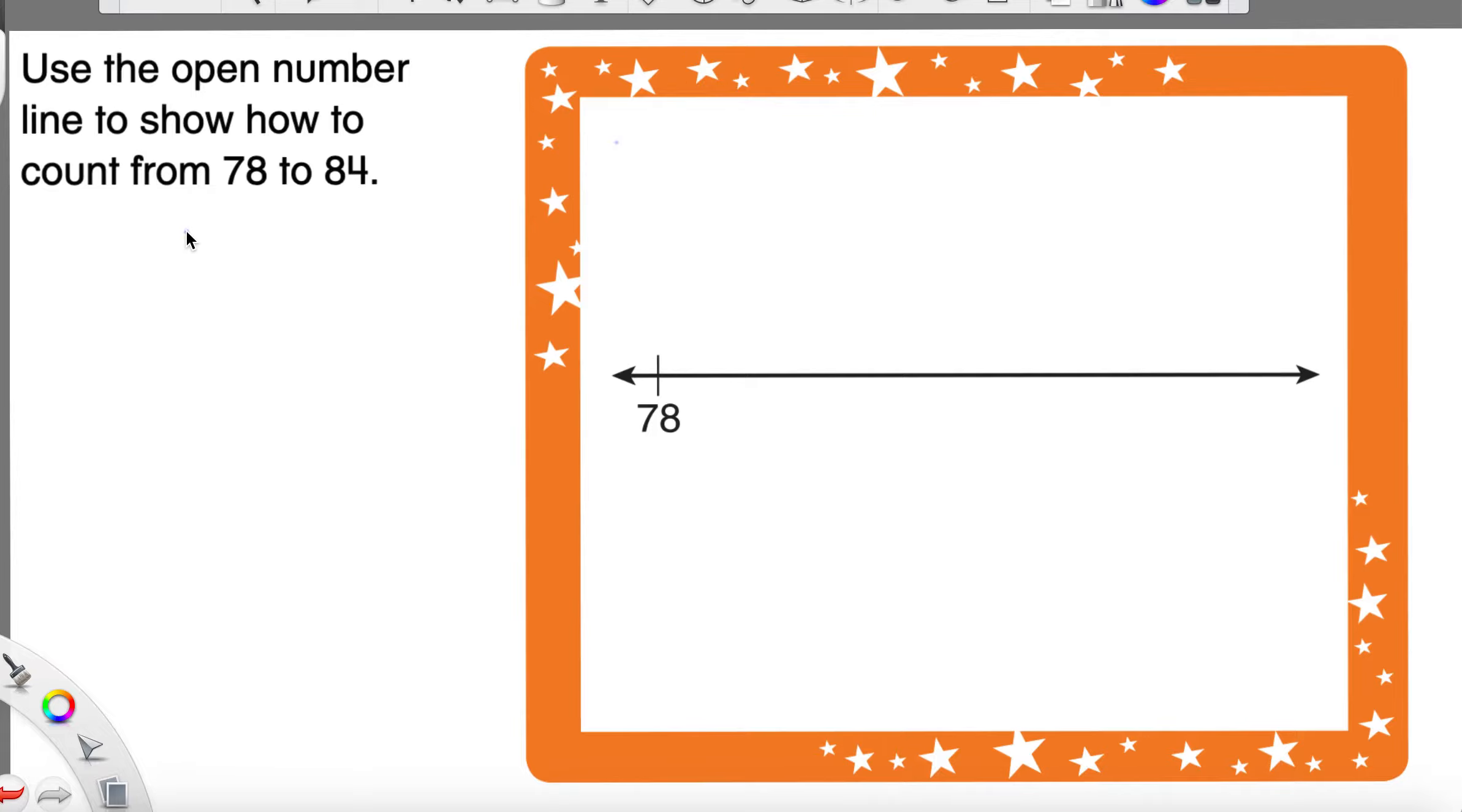We're going to give ourselves a new little problem. Let's say we have to make a number line from 10 to 40 counting by 10s. So, if we have to figure out how many jumps from 10 to 40 counting by 10s, let's try to figure this out.